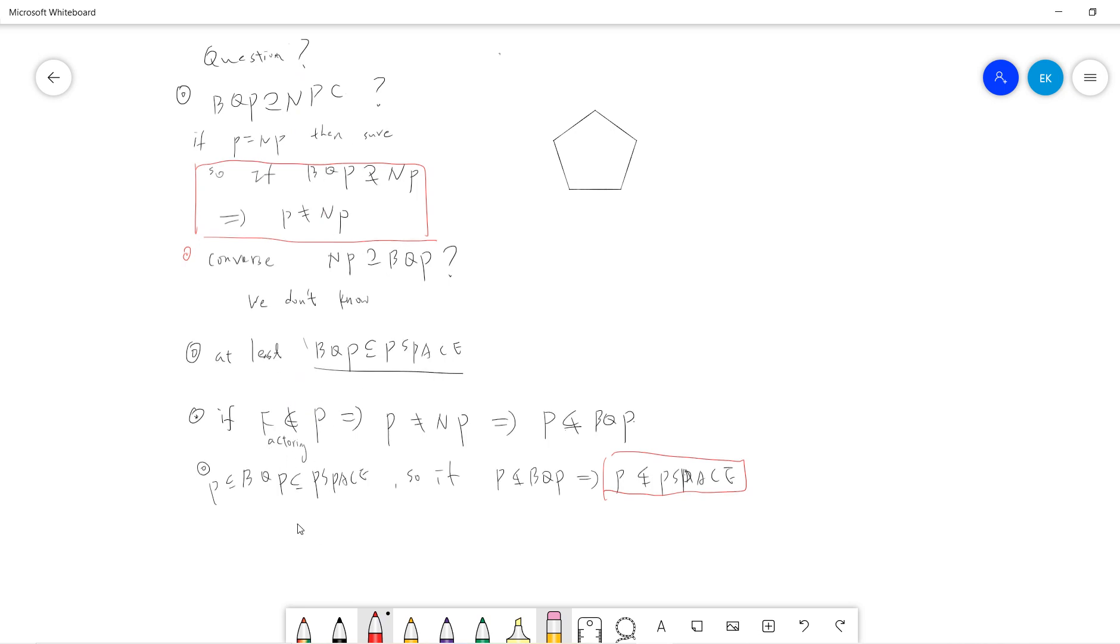If factoring becomes NP-complete, then co-NP will equal to NP. Then the polynomial hierarchy will collapse into some level. This is also a conjecture that factoring cannot be NP-complete.